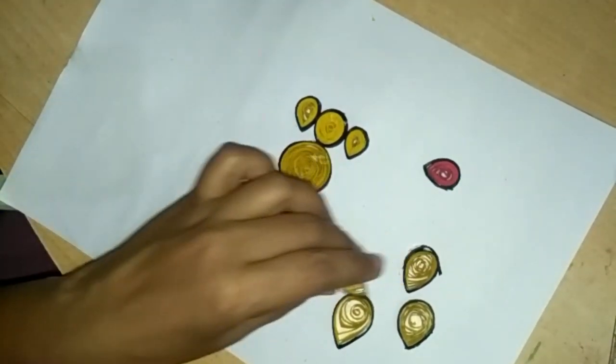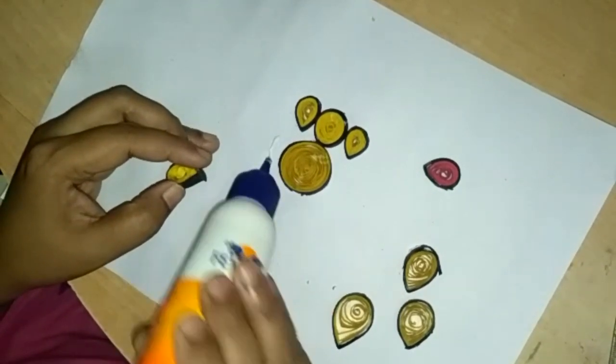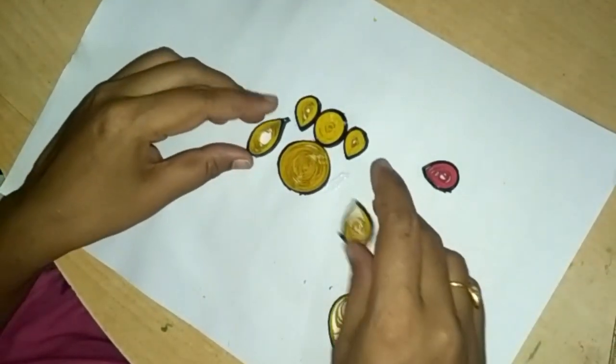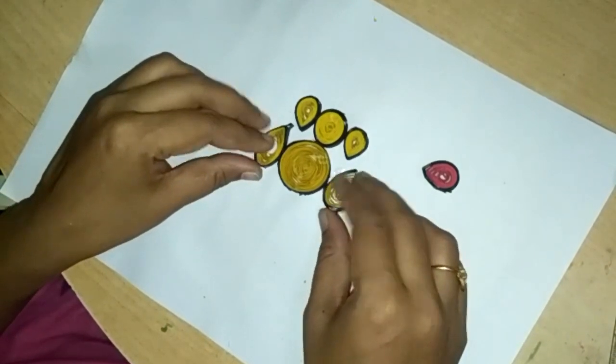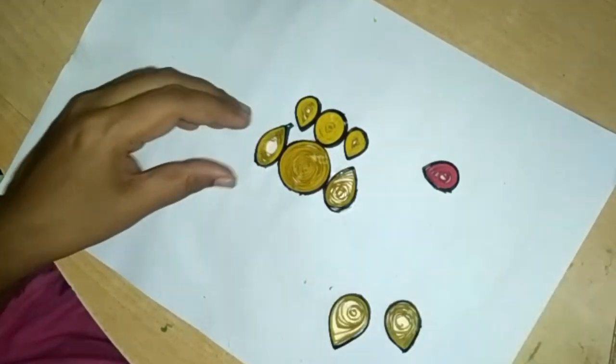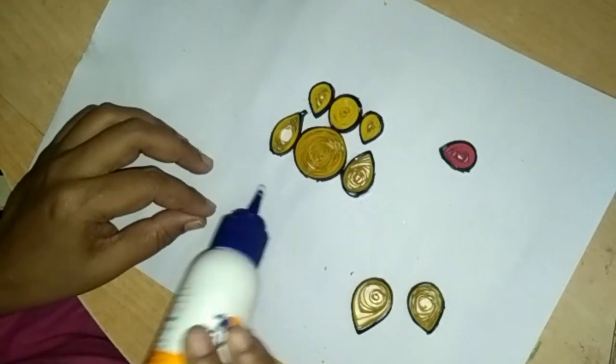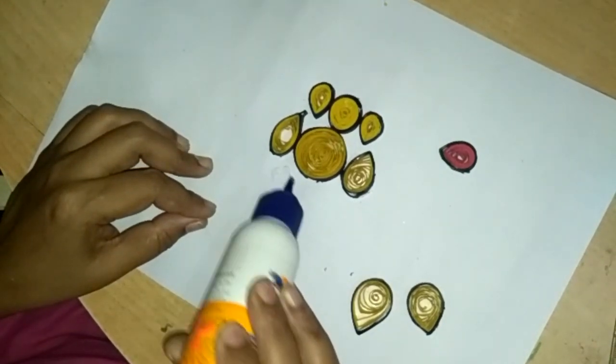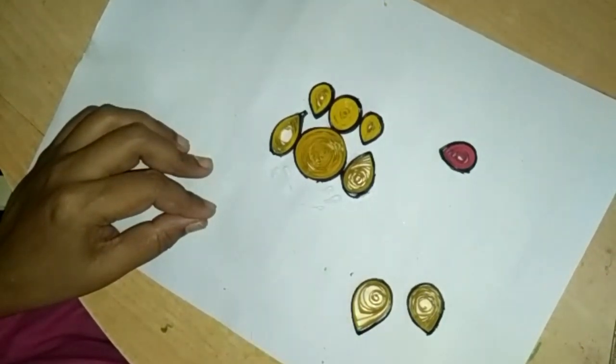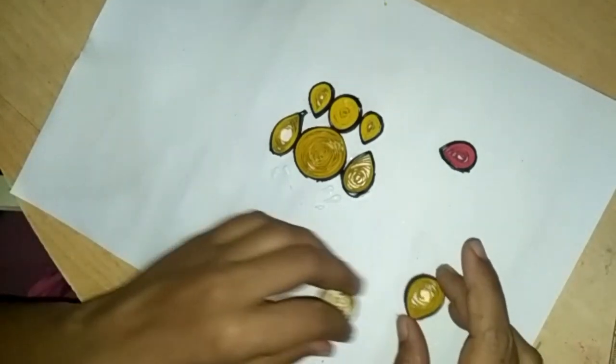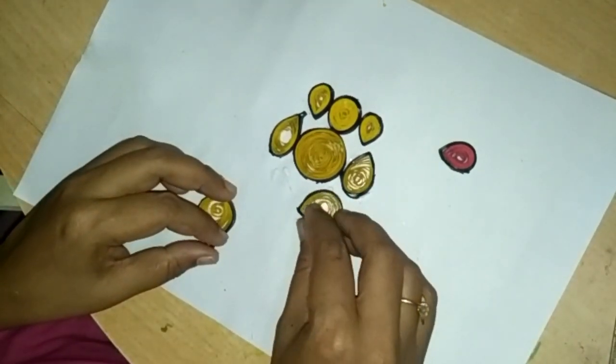Apply fake oil here and paste medium petal shapes like this. Again apply fake oil and adjust these petal shapes like this. Observe me carefully.